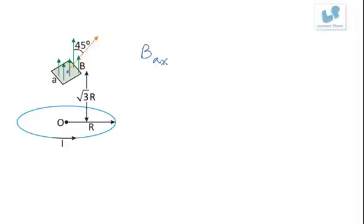So magnetic field along the axis is given by μ₀ current I R² upon two times R² plus Z² to the power 3/2.